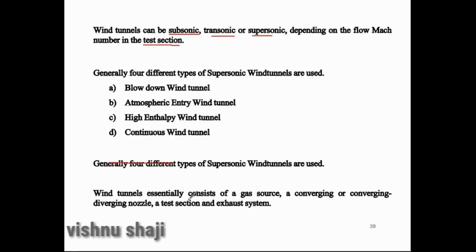Wind tunnels essentially consist of a gas source, a converging or converging-diverging nozzle, a test section, and an exhaust system.